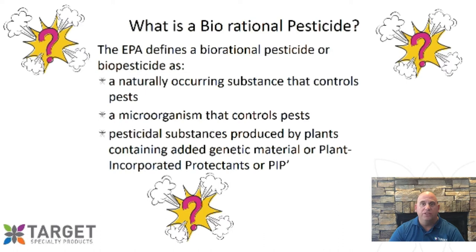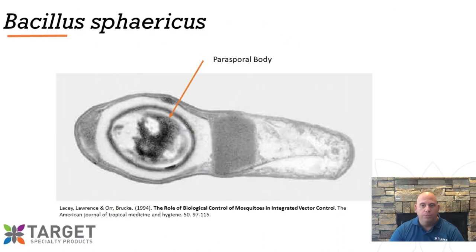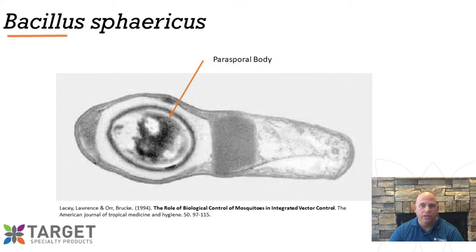Bacillus sphaericus is just that — a naturally occurring spore-forming bacterium found in soils. During the course of sporulation, sphaericus produces a perisporal body, or a crystal, that contains two mosquito-cidal proteins called BinA and BinB. Neither protein alone is toxic to larvae, so both are required for toxicity.